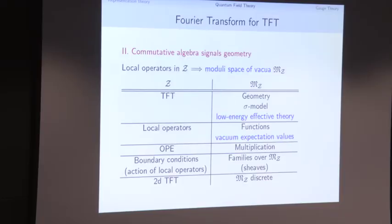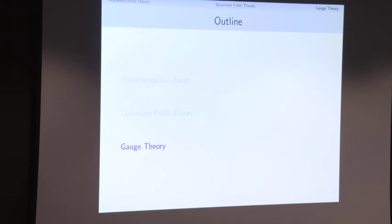This is our point of view on topological field theory: it meets the natural structure that is exactly the structure we saw in representation theory — the structure of the Fourier transform. Now I'd like to bring these two pictures together using gauge theory, seeing how they talk to each other.